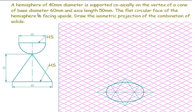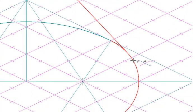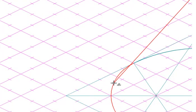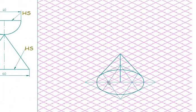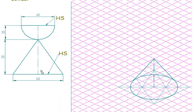The axis length is 50, not 60 as I initially set — I've corrected that. From the base, the height is 20, because the hemisphere diameter is 40, so the radius is 20. From the center of the 60mm base diameter, we count up: 10, 20, 30, 40, 50. The cone lines must be drawn tangent from the ellipse, just as in a standard cone problem.